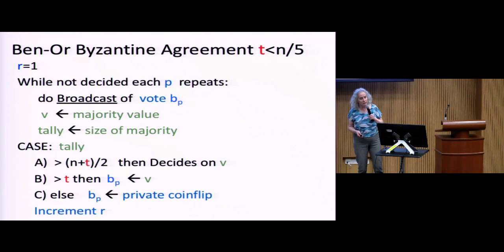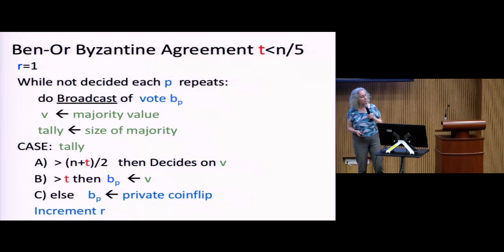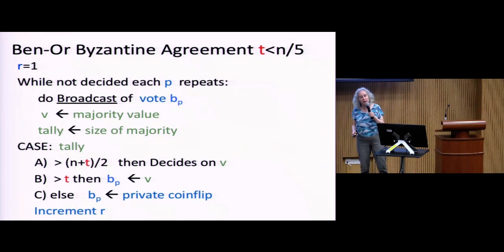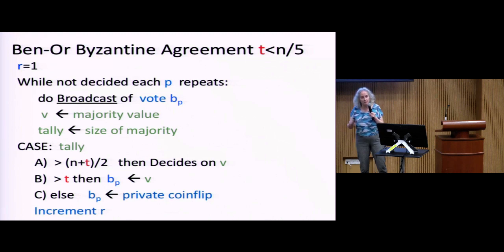Now for Ben-Or's algorithm from 1983 — the first algorithm to achieve Byzantine agreement with randomization. His original algorithm works for T less than N over 5, and it was upgraded by BRCA a year later to N over 3. It also repeats in rounds. In the asynchronous model, you have to label the rounds of your messages because messages can come out of order — the adversary controls when messages are delivered, so you don't know the ordering.